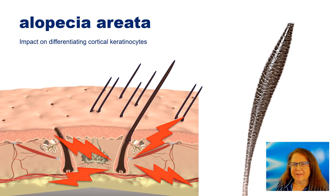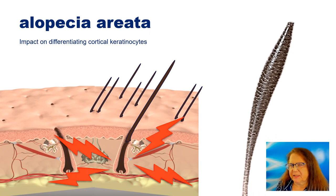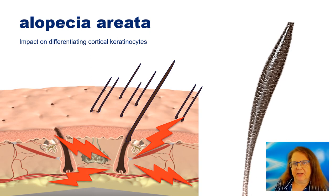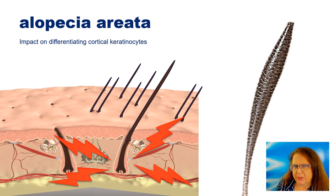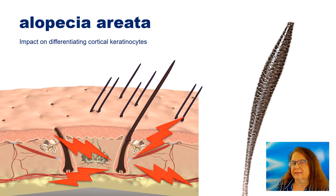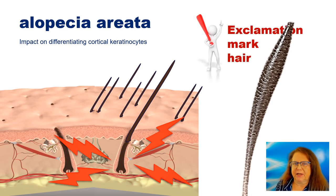Let us imagine that this is a growing hair shaft in a patient with alopecia areata. Because there is a significant impact of the inflammatory infiltrate around the hair follicle, the hair shaft, as it grows, will become thinner and thinner and weaker, and may be hypopigmented at the base. So the end effect will be a hair which is of normal thickness at the distal end and thin and hypopigmented at the base. And this is how an exclamation mark hair develops.